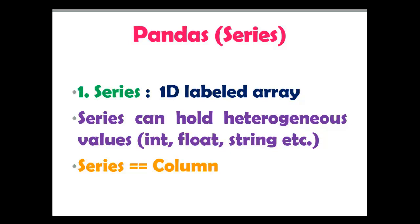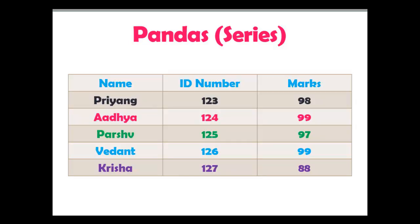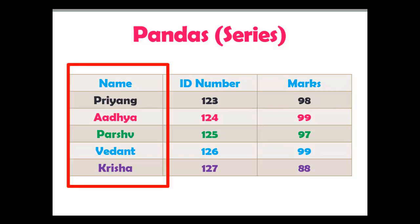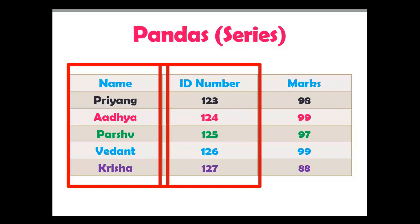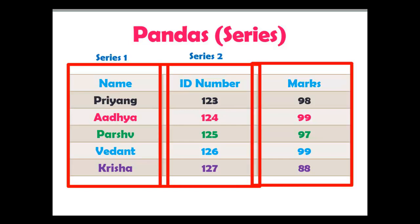Now what is pandas series? Pandas series is a 1D labeled array. Series can hold heterogeneous values like integer, float, string, etc. Pandas series is one column of a pandas data frame. Here you can see the pandas data frame in a tabular format. There are 3 series: series 1, series 2 and series 3.